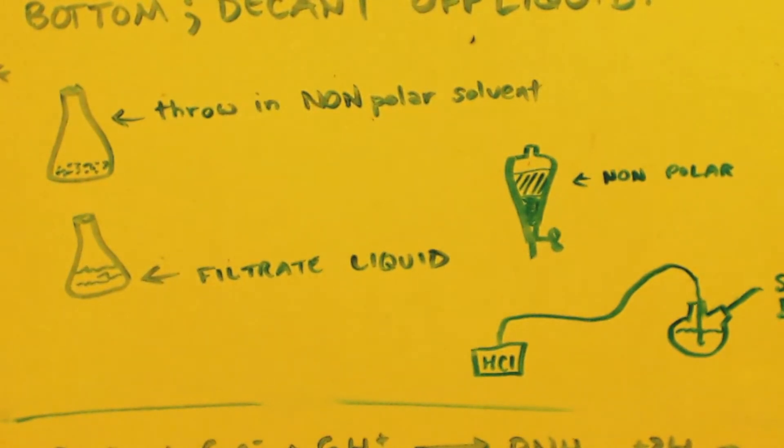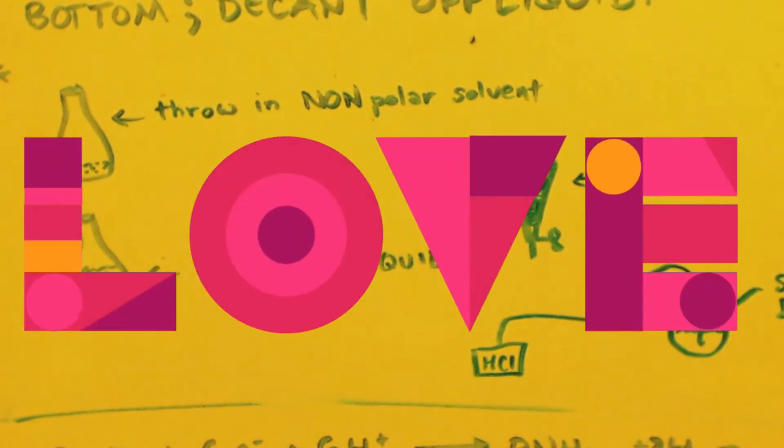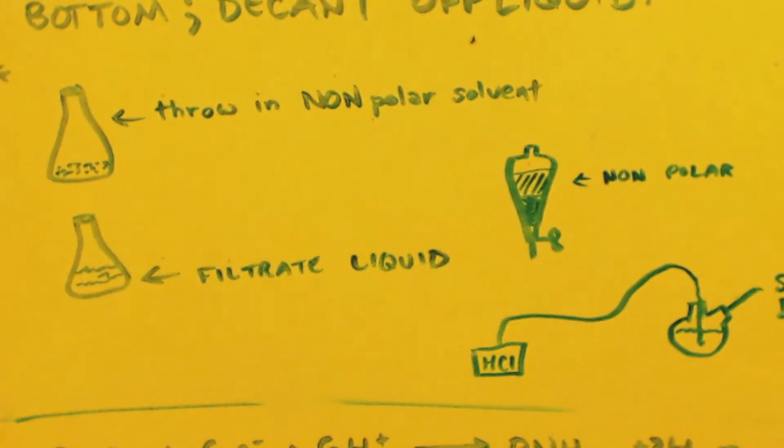So anyways, you're going to take this mother liquor, put it in a sep funnel, and there's probably enough water in there for it to form two layers. You shake it up and vent it, let it sit for 15-20 minutes. And then drain out the water and save it. Take the water layer and save it. Take the non-polar layer and set it aside. That's your mother liquor.